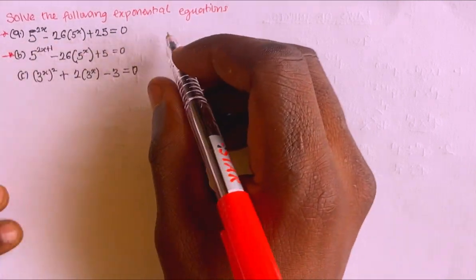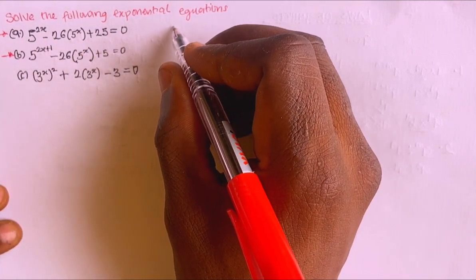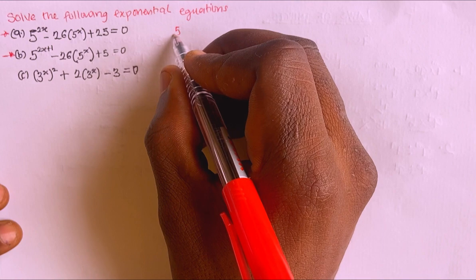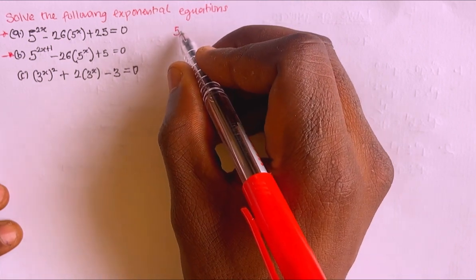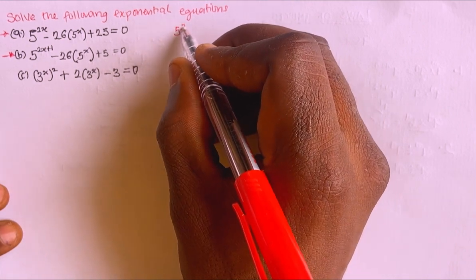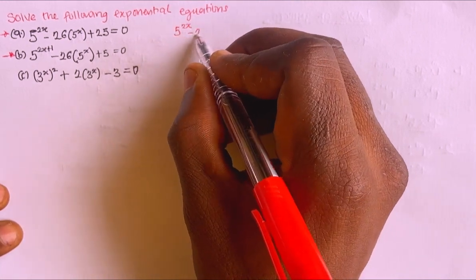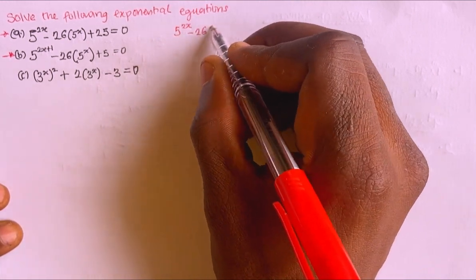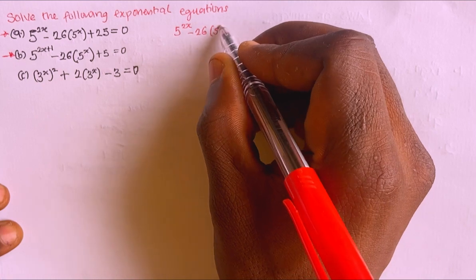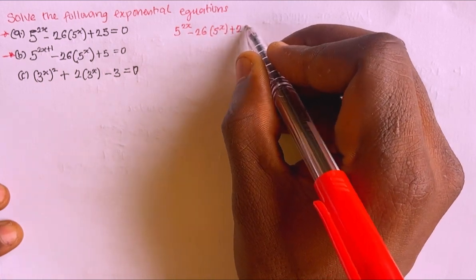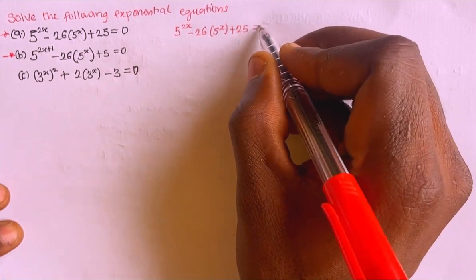Let's see the first one. I'm having 5 raised to the power 2x, minus 26 into brackets 5^x, plus 25 is equal to 0.